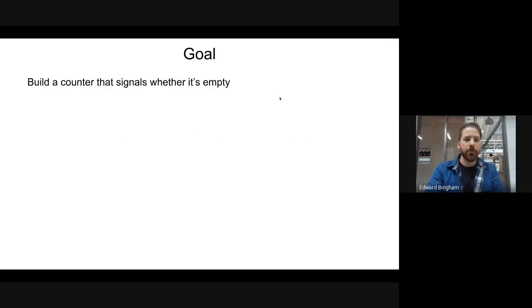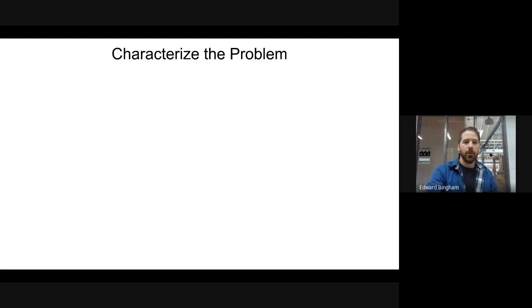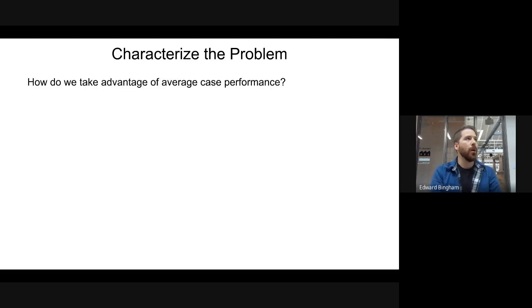Our goal is to build a counter that signals whether or not it's empty, and we want it to do this in constant time. When you first start a problem like this, you want to make sure you entirely understand the behavior of your inputs and outputs and what you expect data patterns to look like. Then you want to ask how we might be able to take advantage of those behavioral patterns to get average case performance instead of worst case. This question is the most important when building a self-timed circuit because you inherently have a 2x area overhead as a result of your delay-insensitive encodings.